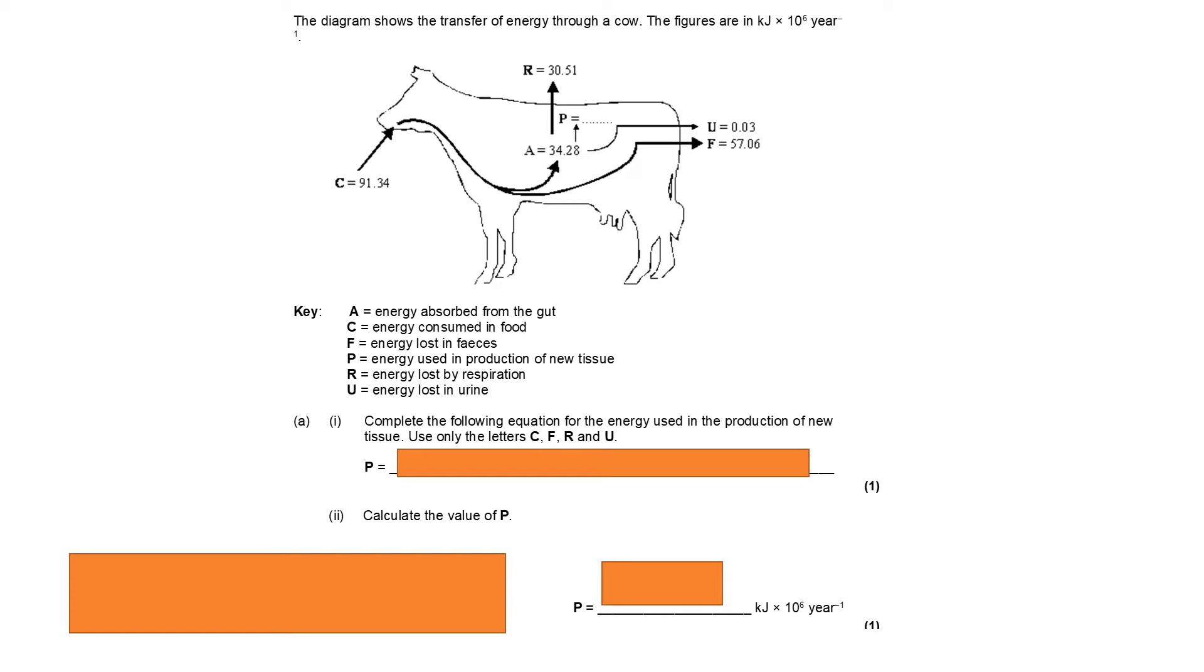So it's asking us to complete the following equation for the energy used in the production of new tissue using only the letters C, F, R, and U. So it's giving us a big clue here because what it's saying is basically we can ignore A, energy absorbed from the gut here. We don't need to take that into account.